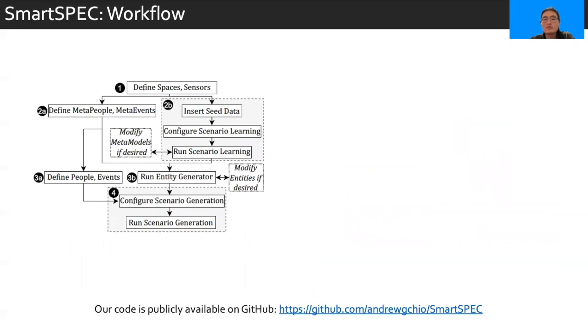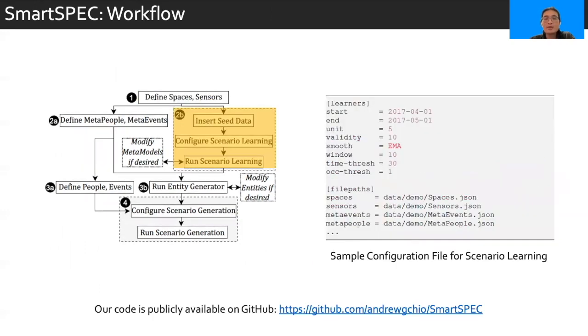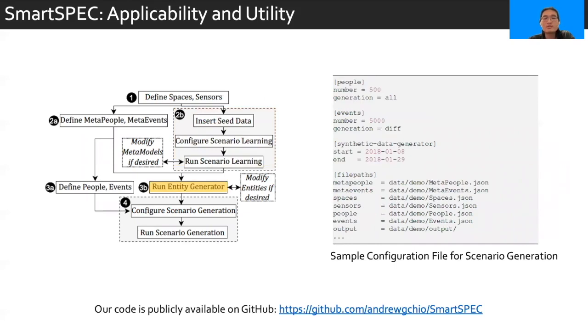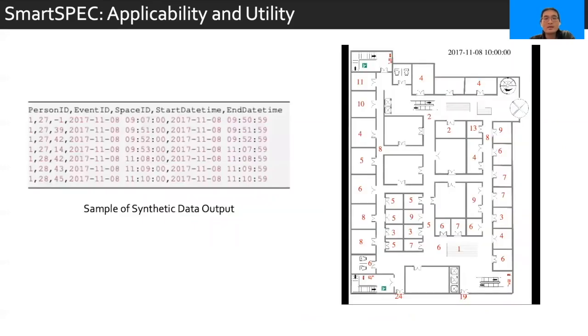Lastly, we wanted to show a quick preview about how SmartSpec operates. There are multiple modes of operation and more details are available in the GitHub link below, but I want to showcase just a small mall scenario in the time that we have remaining. SmartSpec starts with the definition of spaces and sensors, such as the one that we have to the right. Then we look at a workflow going to 2b, which is the scenario learning component. Here, we need to insert the seed data into a database and run the scenario learning component. And then there are several configurable options for learning, as you can see on the right. After that, the entity generator is run, which uses the configuration file now for scenario generation. In this example, we generate 500 people and 5,000 events, as we can see at the top of the configuration file. Then the scenario generation component is run, specifically the synthetic data generator. The output looks something like what we have on the left-hand side. However, since it's difficult to understand what's happening here, we have a short video to visualize what's happening in the mall setting.